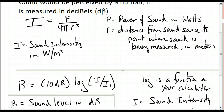For example, if someone was standing on a field yelling, we could say she has a certain amount of power in her voice. If you were 10 meters away from her and wanted to determine the intensity of her sound at your location, r would be 10 meters. We square the r, but not the 4 pi. The units for that will be watts per meter squared, because 4 pi has no units.